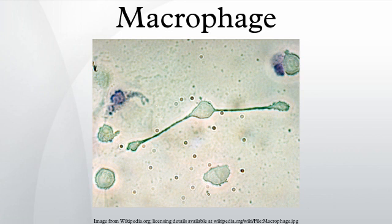HIV can enter the macrophage through binding of GP120 to CD4 and the second membrane receptor CCR5. Both circulating monocytes and macrophages serve as a reservoir for the virus.